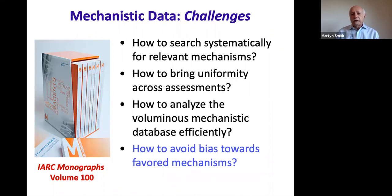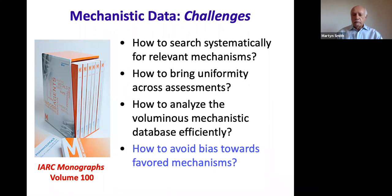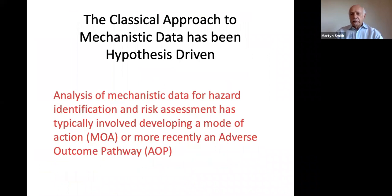The problem with mechanistic data is it poses some serious challenges. How do we search systematically for all the relevant mechanisms? How do we bring uniformity across assessments? How can one committee analyze mechanistic data in the same way as another? How can we analyze the voluminous mechanistic data efficiently? And one of the most important things is: how do we avoid bias towards favored mechanisms?